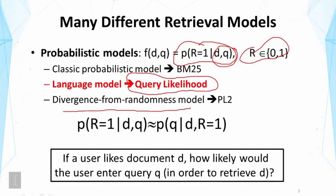In query likelihood, our assumption is that the probability of relevance can be approximated by the probability of query given a document and relevance. Intuitively, this probability captures the following: if a user likes document D, how likely would the user enter query Q in order to retrieve document D? We assume that the user likes D, and then we ask how likely we will see this particular query from this user.